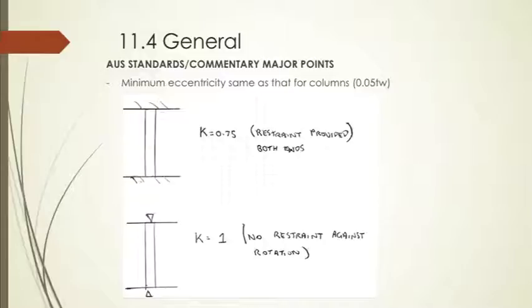So getting into Section 11.4, which talks about the effective height. First of all, for one-way buckling, you've got K equals 0.075, where restraint against rotation is provided at both ends. So in this case, this will be both ends of the wall being fixed, providing restraint against rotation. And then K equals 1, and that's for both ends of the wall having pinned connections or pinned supports.